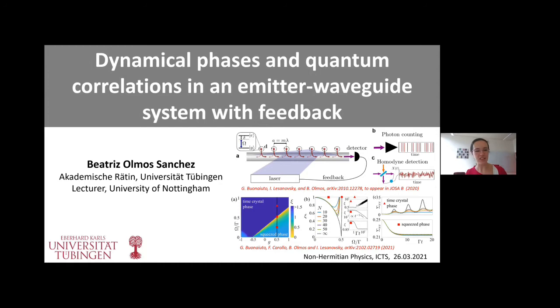I'm going to be talking about dynamical phases and quantum correlations in an emitter-waveguide system with feedback. There are a few things we've already heard and a few things we haven't. Dynamical phases and quantum correlations have been discussed at length, but the emitter-waveguide system and feedback have not, so I'll go through them even if I repeat some concepts.